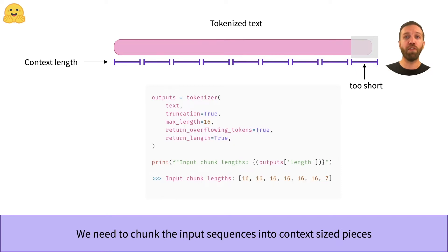Using the return_overflowing_tokens flag, we can use the tokenizer to create chunks with each one being the size of the context length. Sometimes it can still happen that the last chunk is too short if there aren't enough tokens to fill it. In this case we can just remove it.